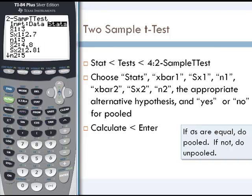We could enter the data if we only had the raw data, or for this we will assume that we actually have the statistics for the samples that we have collected. So we have collected two samples.